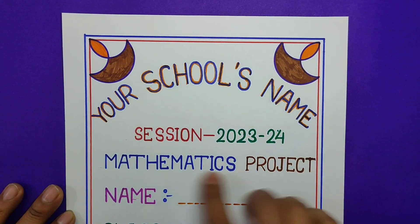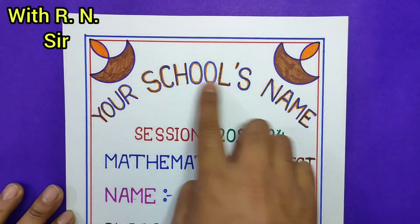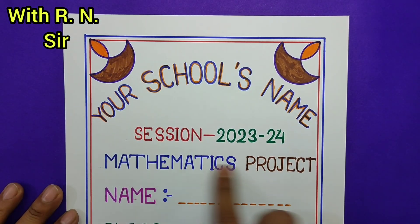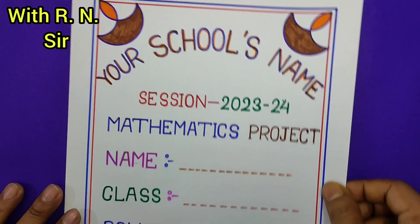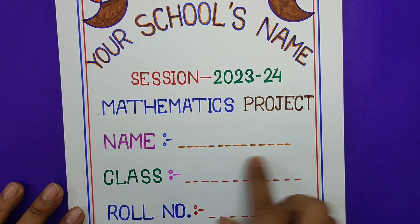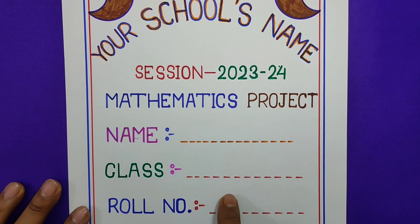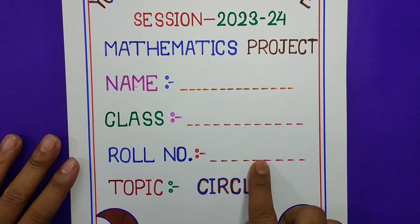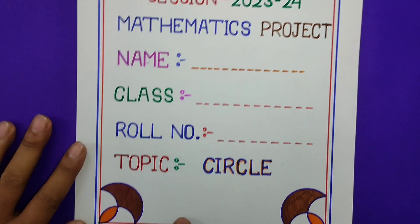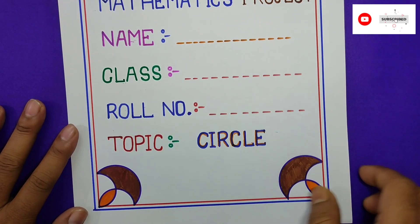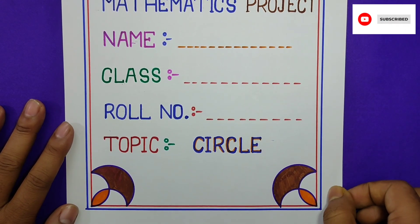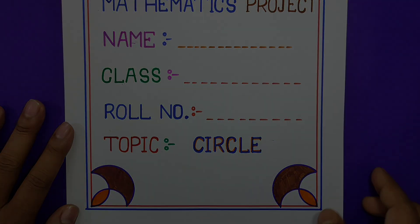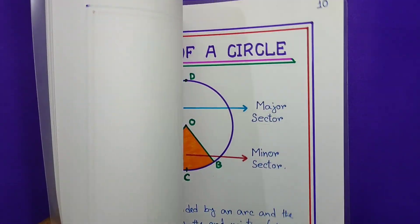This is the front page of the project. First, you will write your school's name, then session, then mathematics project, then your name, then class, then your roll number, and the topic — meaning which topic you are doing this project on. Here the topic is circle. So this is the complete project.